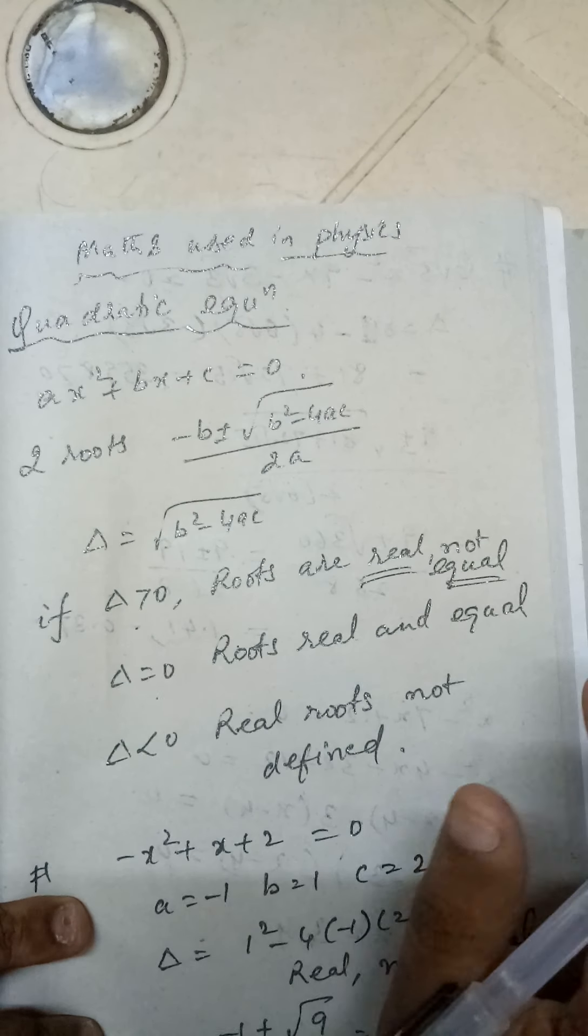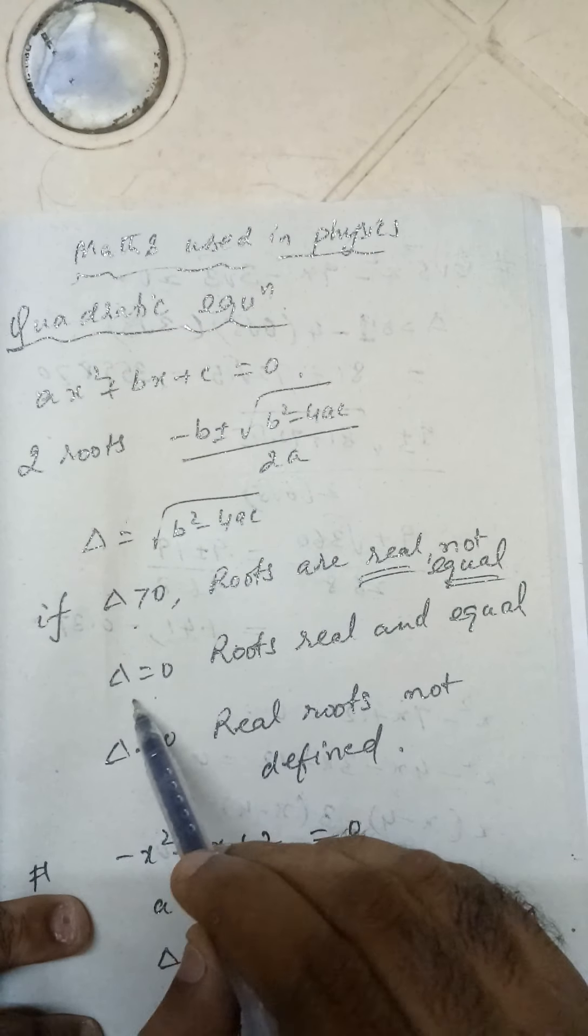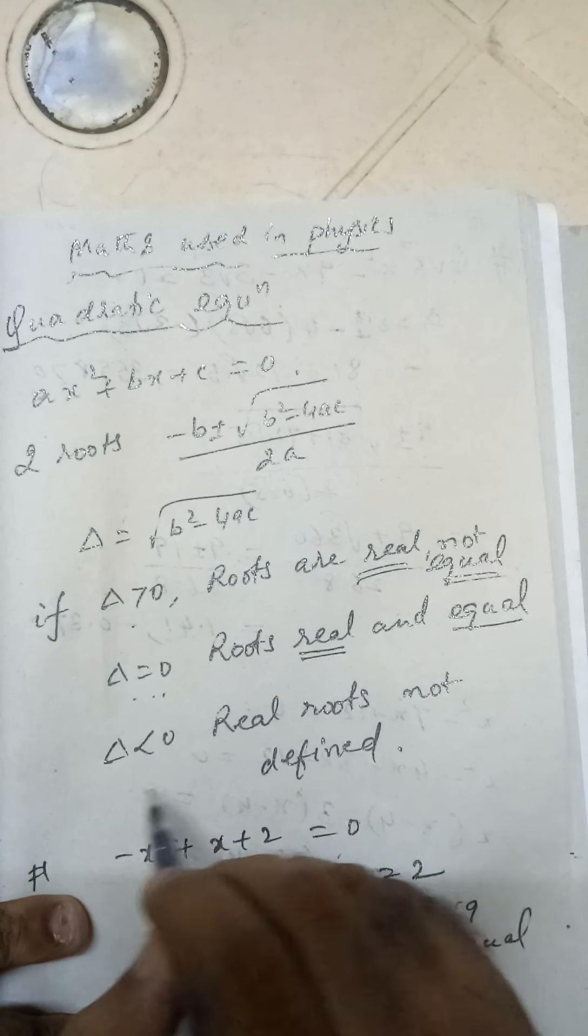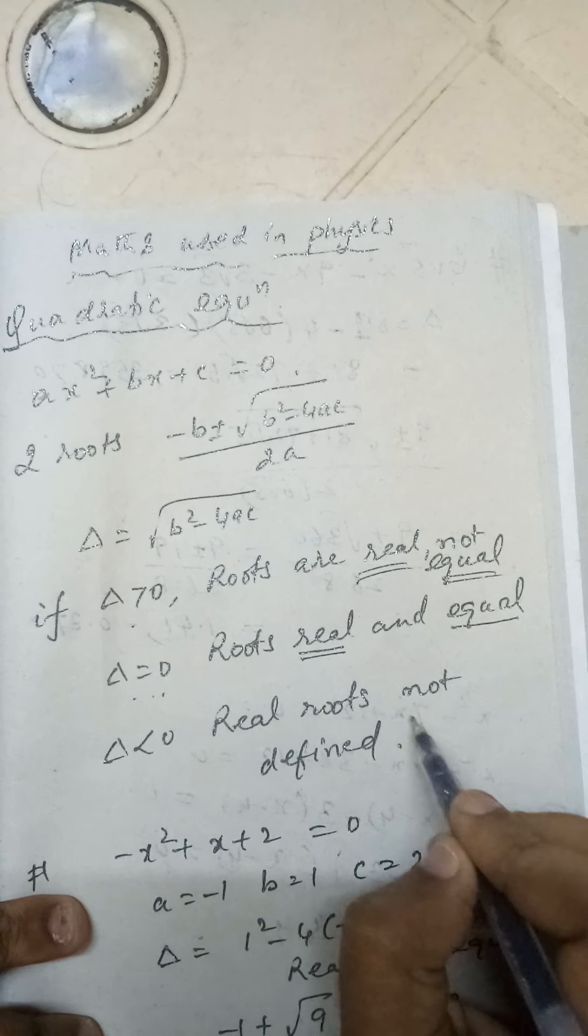When Δ = 0, the roots are real and they are equal. And when Δ < 0, the roots are not defined - they are unreal.